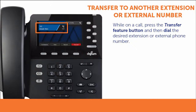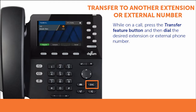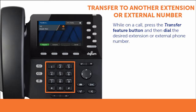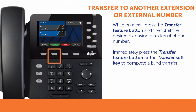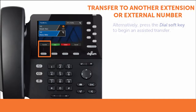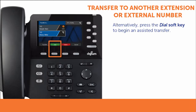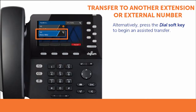While on a call, press the Transfer Feature button. Then dial the extension or phone number of the person to whom you wish to transfer the call. To complete a blind transfer, press the Transfer Feature button or Transfer soft key. Or to begin an assisted transfer, press the Dial soft key, which starts a new call to your preferred contact.